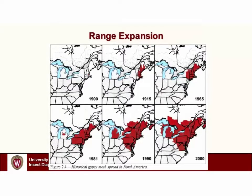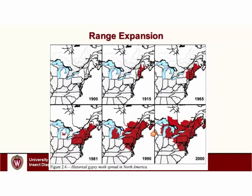What did the expansion actually look like? We had our first outbreak in New England in the 1880s. By 1900, there wasn't much spread. By 1915, some spread northward into Maine, but things were fairly quiet — from 1915 to 1965, that's 50 years with very little spread. Then by 1981, we had additional spread in New England, New York, Pennsylvania, and New Jersey, but also a population popped up in Michigan. By the early 1990s, basically all of lower Michigan had gypsy moth. That led to about the year 2000, where we had our first cases of defoliation in the state of Wisconsin.